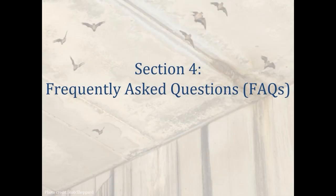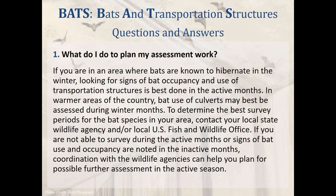Section 4: Frequently Asked Questions. Question 1: What do I do to plan my assessment work? If you're in an area where bats are known to hibernate in the winter, looking for signs of bat occupancy and use of transportation structures is best done in the active months. In warmer areas, bat use of culverts may best be assessed during winter months. To determine the best survey periods for bat species in your area, contact your local state wildlife agency and/or local U.S. Fish and Wildlife Office. If you are not able to survey during the active months, or if signs of bat use are noted in the inactive months, coordination with wildlife agencies can help you plan for further assessment.